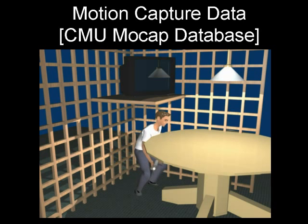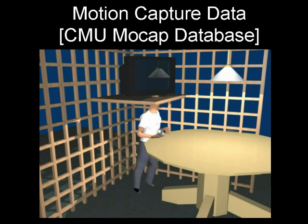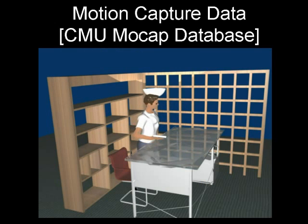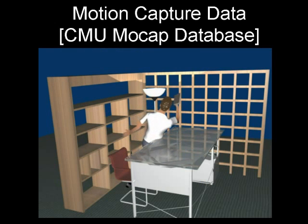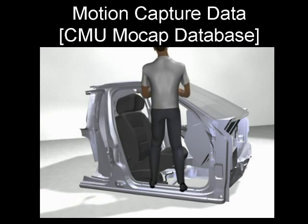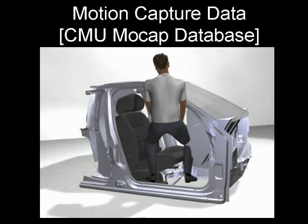We employ data from the Carnegie Mellon Motion Capture Library. Our approach does not require motion capture of the exact motion being generated — motion that is roughly similar is sufficient. For our benchmarks, we found 20 such motion clips, although our generated motion is so different that it would be impossible to create it from local modification of the motion capture data.